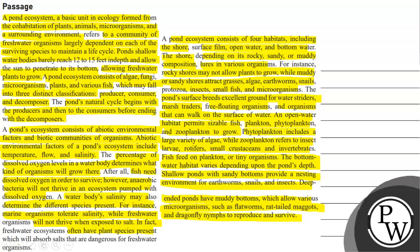So, let's understand this in brief. There is a pond ecosystem which is the basic unit formed from a coexistence of plants, animals and microorganisms. Cohabitation means many animals living together. They refer to the community of freshwater organisms which are dependent on surviving species to maintain the life cycle.